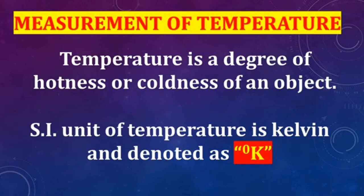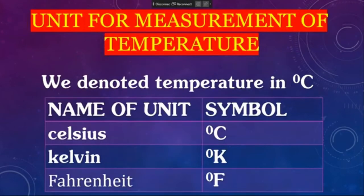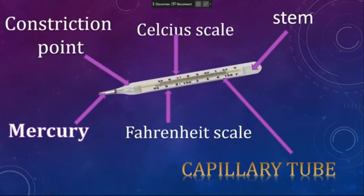The next topic is measurement of temperature. Temperature is the degree of hotness or coolness of an object. The SI unit of temperature is Kelvin, denoted as K. Like mass, length, and time, temperature also has units — Celsius, Kelvin, Reaumur, and Fahrenheit. We measure length by scale, time by stopwatch or clock, and mass by weight scale or beam balance. Similarly, we can measure temperature by a thermometer. There are different types of thermometers — clinical thermometer and laboratory thermometer.